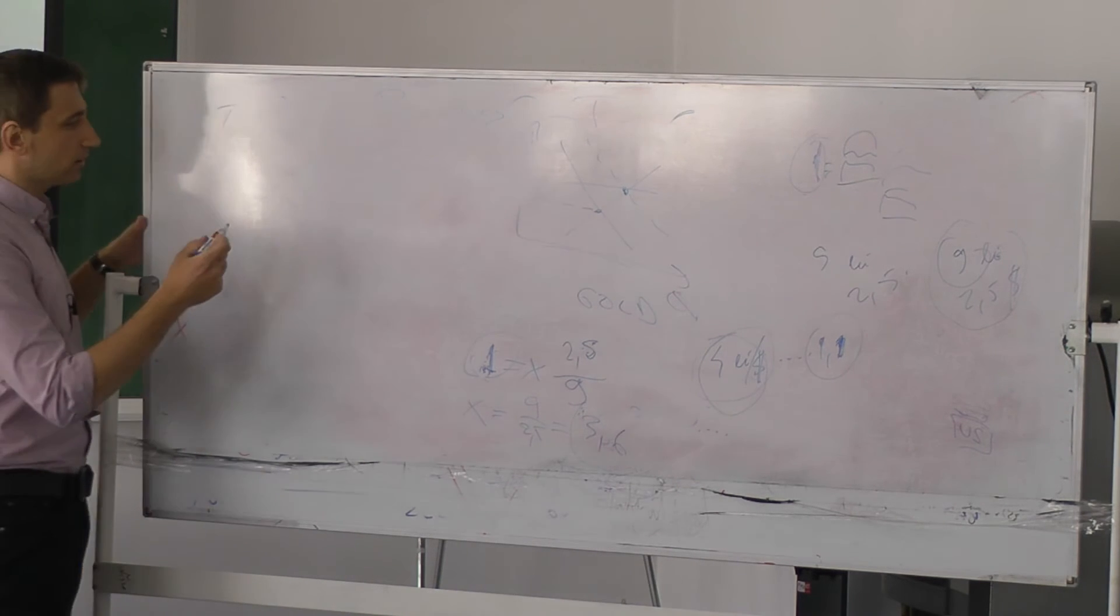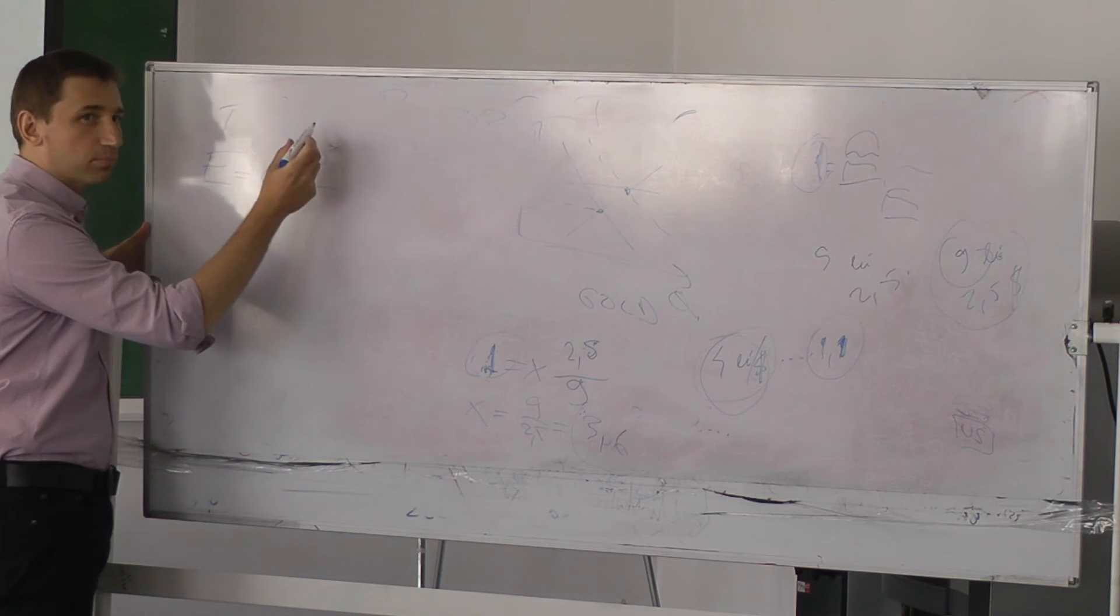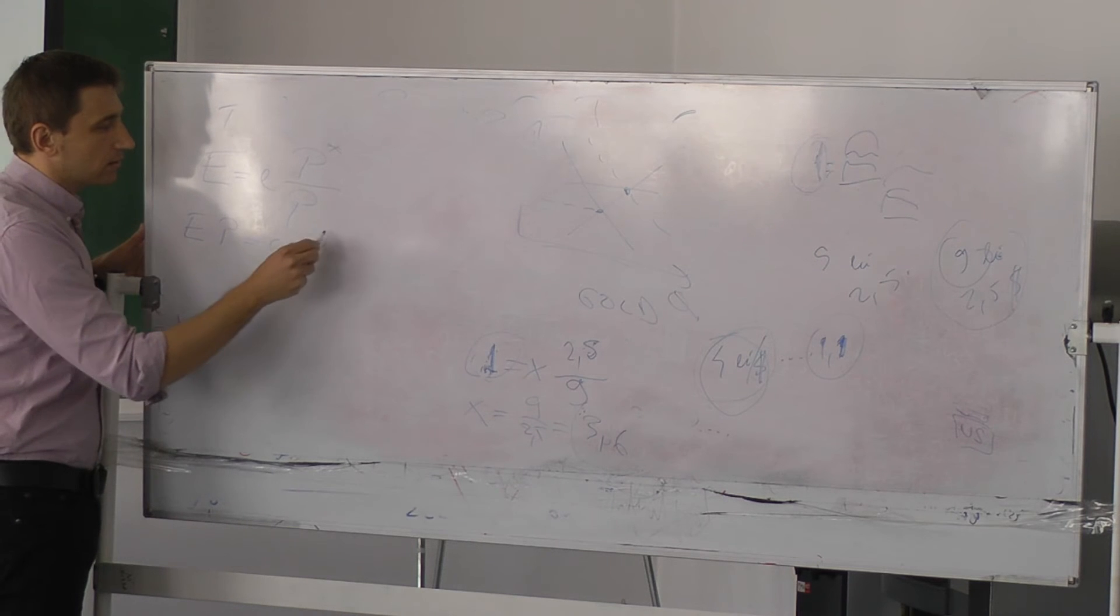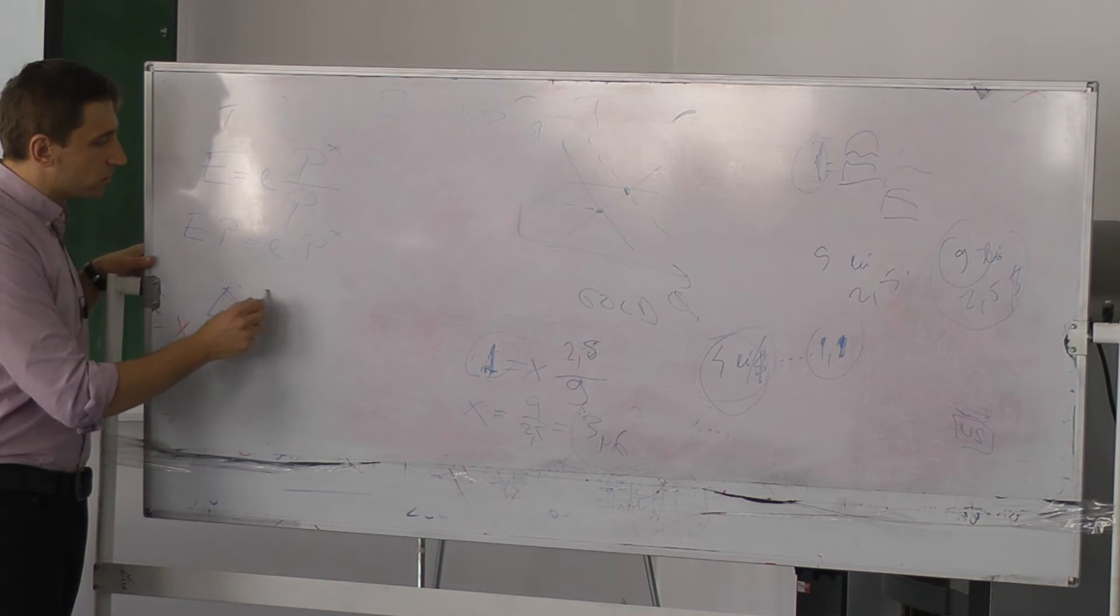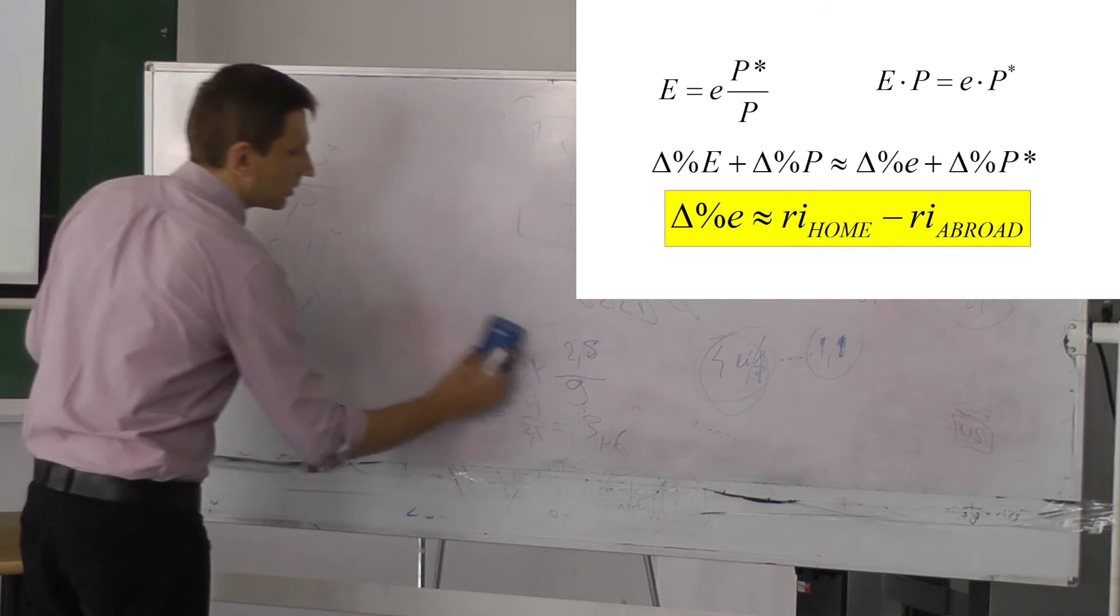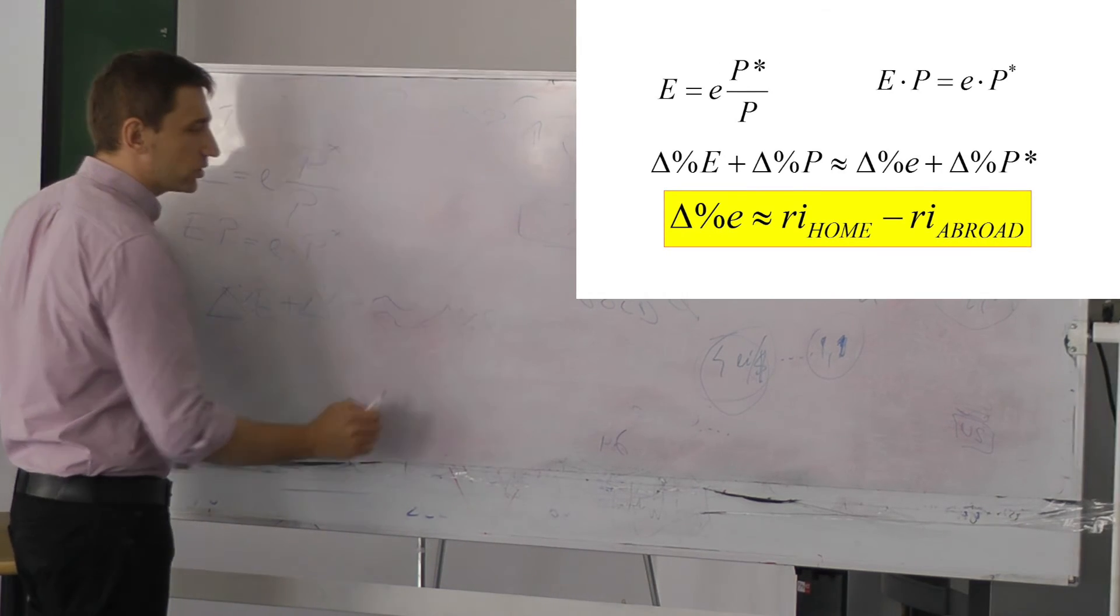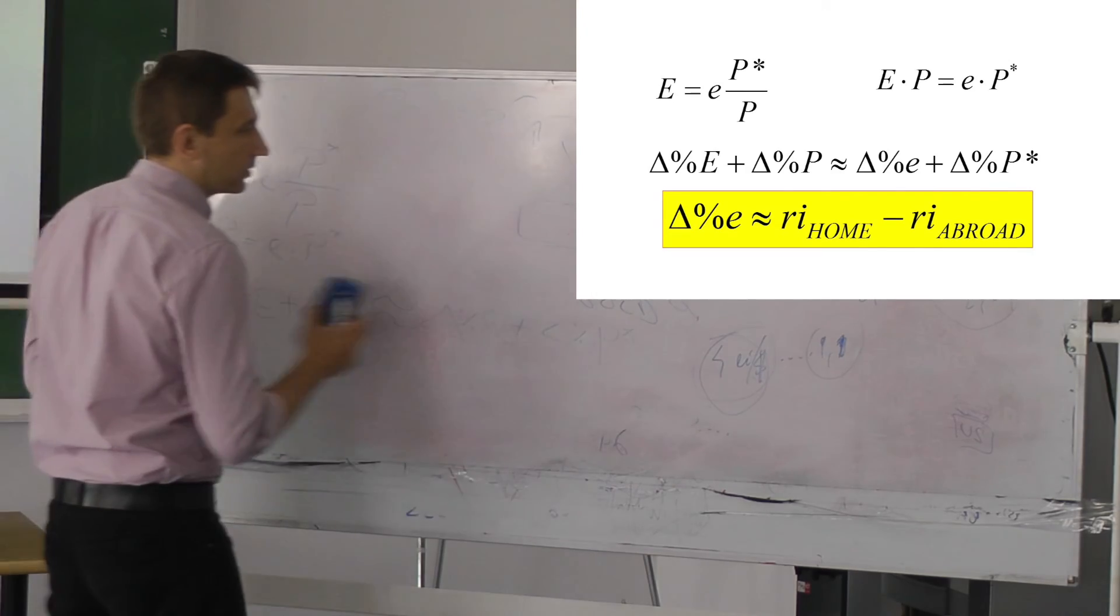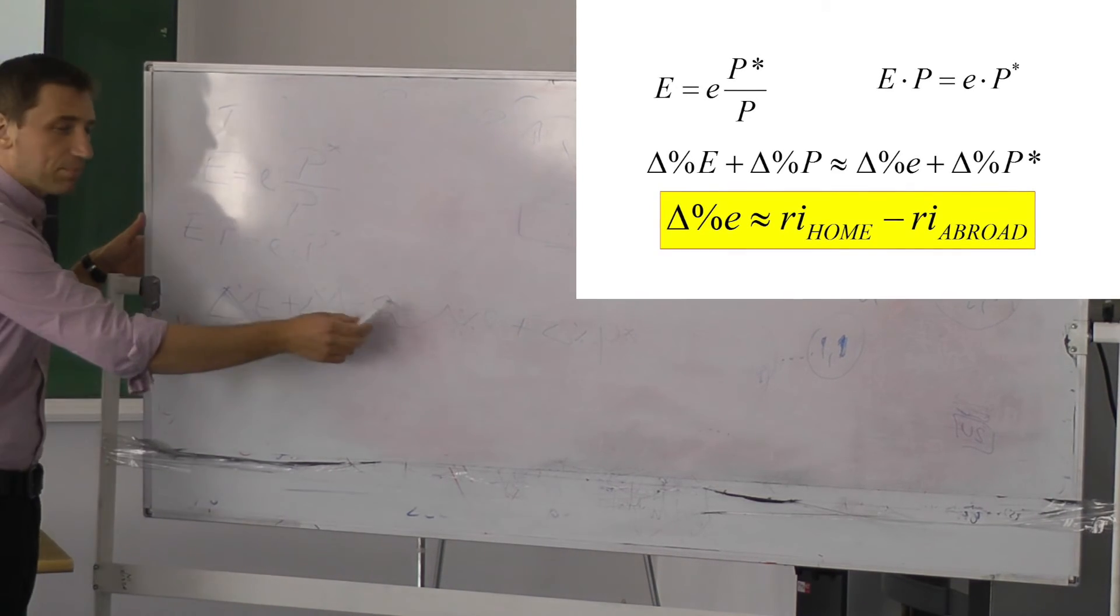Here, I can write this formula, and please take that. This is the real exchange rate. It's equal to nominal exchange rate multiplied by price abroad over the price in my country. If I make a very easy calculation here, I can write it like this. Now, you can make an adjustment which says percentage change in real exchange rate plus percentage change in domestic prices should approximately equal percentage change in nominal exchange rate plus percentage change in foreign prices. This is basic mathematics.